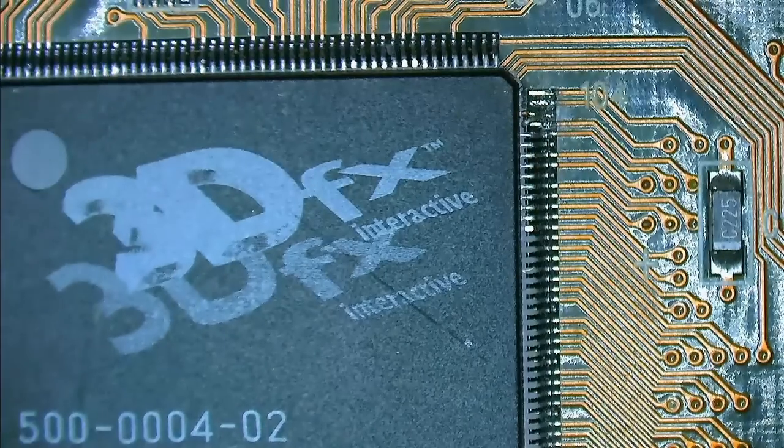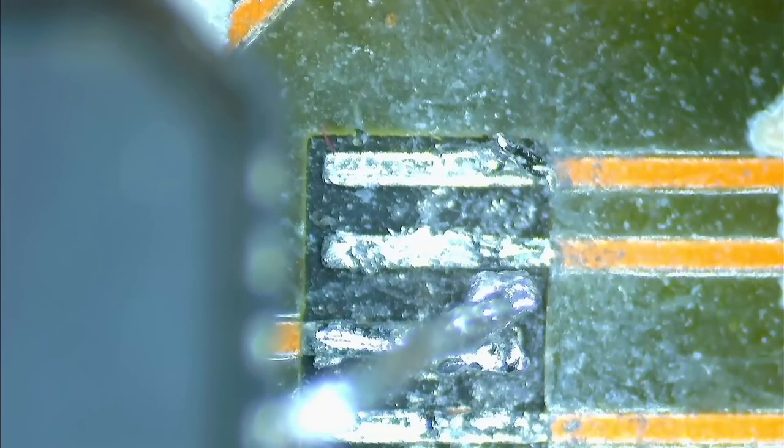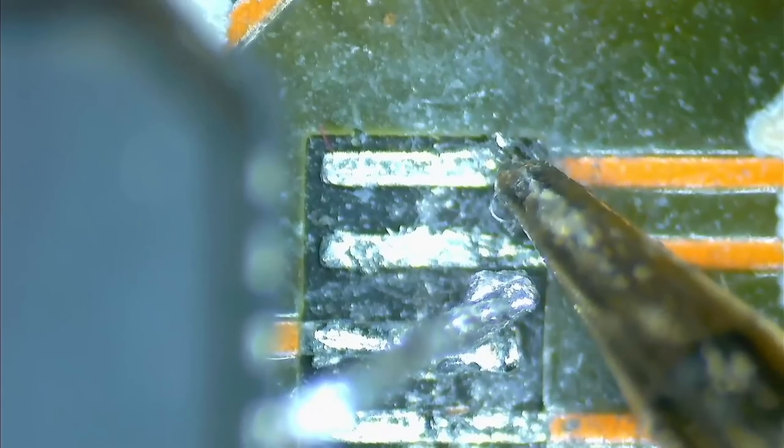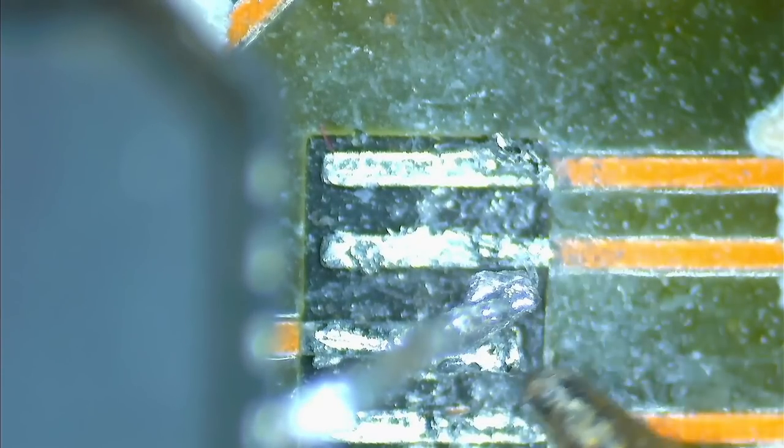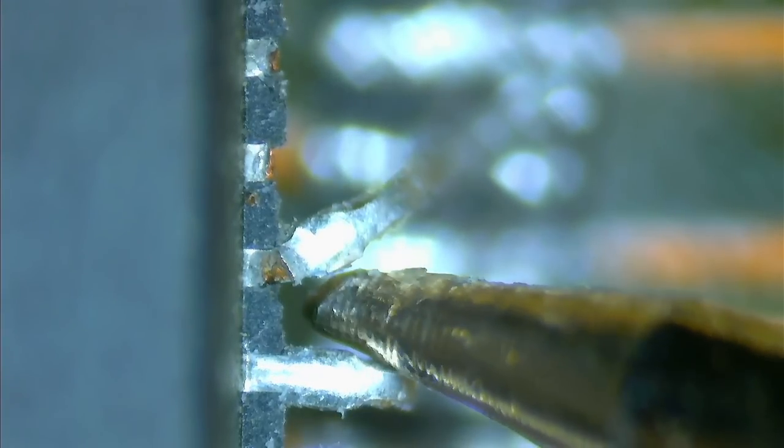But now let's have a look at the area with the missing pins under the microscope. Hmm, I don't know what you think about this, but this looks like someone was already here before, with a soldering iron. Three pins are missing and one pin seems to be barely holding onto the chip. I hope we can salvage this pin, but for sure we need to reinforce it with a bit of fresh solder.